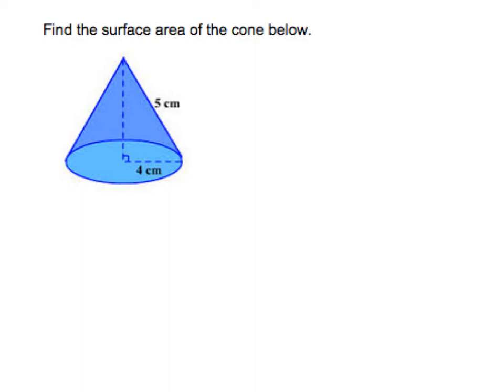Alright, so we're going to look at surface area and volumes of cones and pyramids. Traditionally we're just going to look at pyramids that have a base of a quadrilateral, meaning four sides.